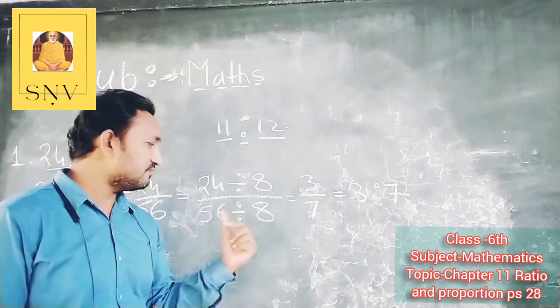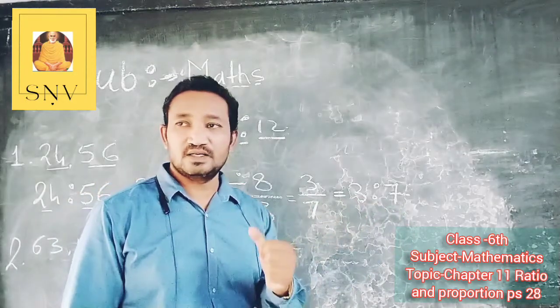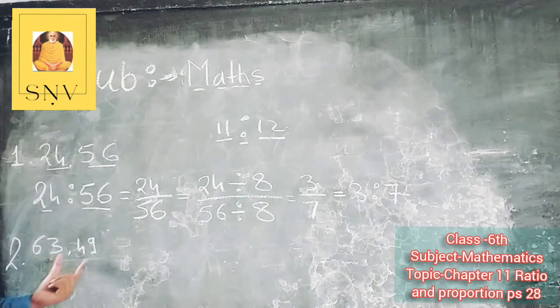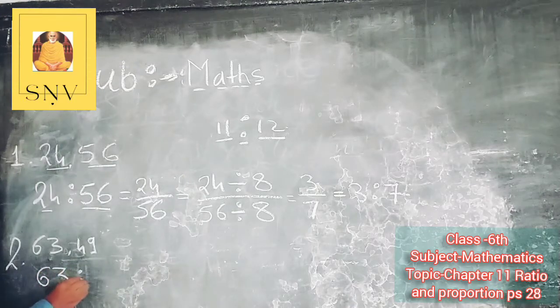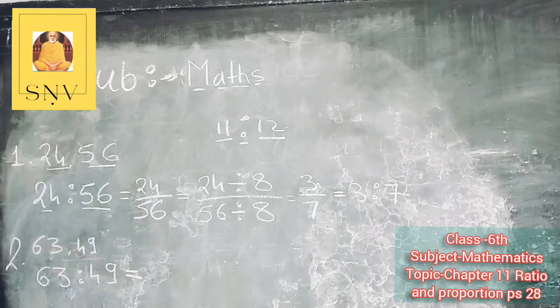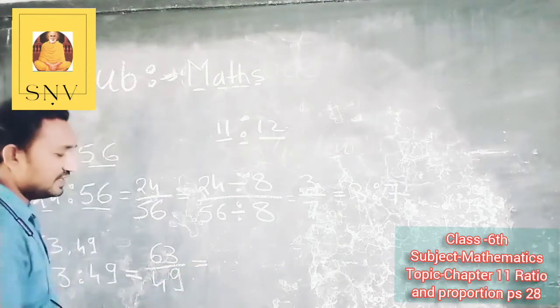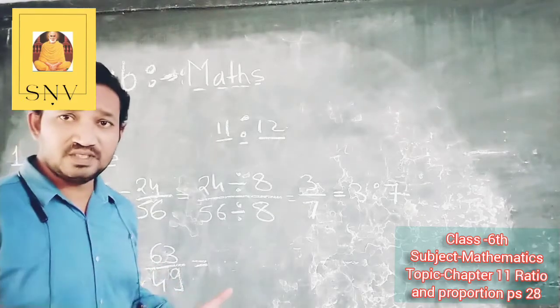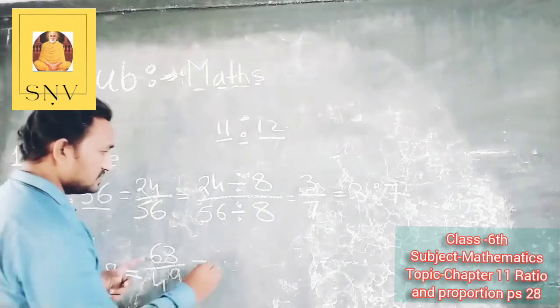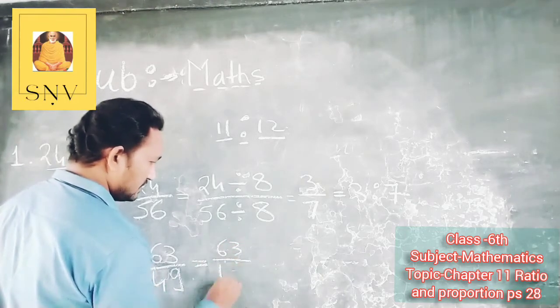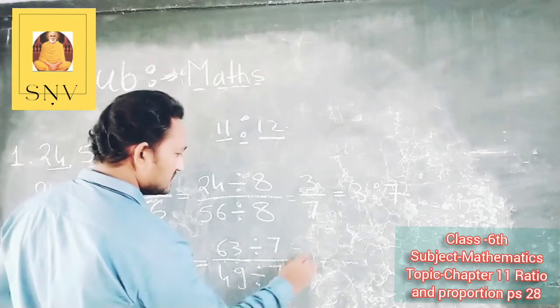63 ratio 49. Then 63 upon 49. Now we have two numbers common. In which table we have two numbers common?